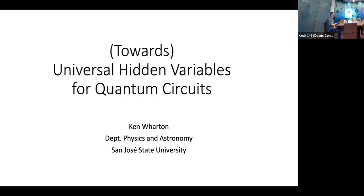We're very happy to have Ken Wharton today visiting us to give our IQS seminar. Ken did his Bachelor's of Science at Stanford and his PhD at UCLA. He's a professor at San Jose State University, but he's now living in the LA area and will start physically commuting in the fall to teach his classes there. Ken is maybe best known for his retrocausal theories of quantum mechanics, but today he's going to tell us about universal hidden variables for quantum circuits. Oh, it's all the same thing.